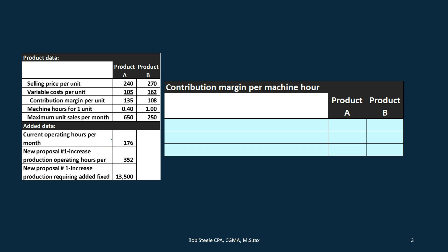We have the current operating hours per month: only 176 hours available in terms of machine hours. That's our constraint — the bottleneck. We also have a new proposal to analyze: increasing those hours from 176 to 352, which will also increase some fixed costs.